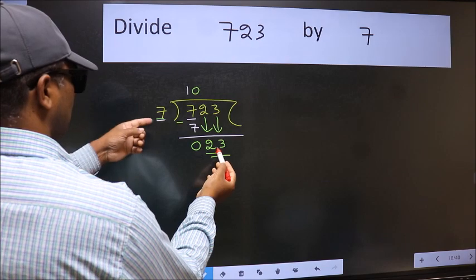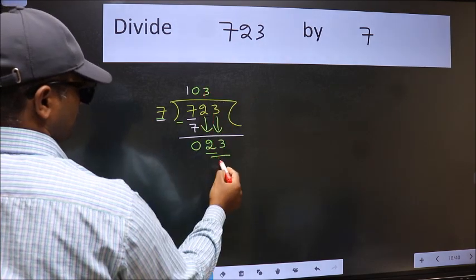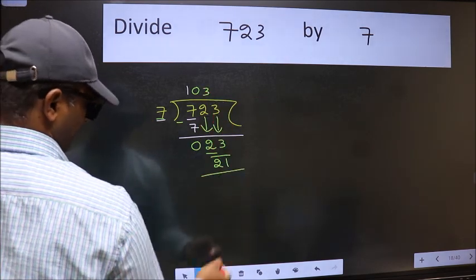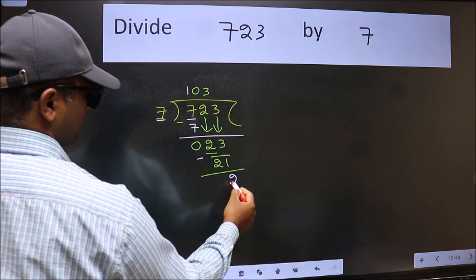A number close to 23 in the 7 table is 7 threes, 21. Now we should subtract. We get 2.